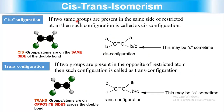If two identical groups are on the same side of the restricted bond, that configuration is called cis-configuration — cis means same side. If two groups are on opposite sides of the restricted bond, that configuration is called trans-configuration — trans means opposite.